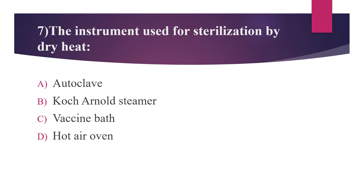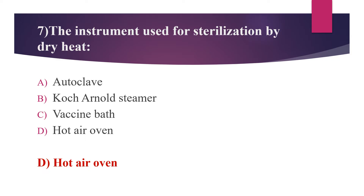Seventh question: the instrument used for sterilization by dry heat. Option A: autoclave. Option B: Koch's Arnold steamer. Option C: water bath. Option D: hot air oven. The answer is option D, hot air oven. The hot air oven is the dry heat sterilization instrument, while the autoclave is a moist heat sterilization instrument. The holding period of the hot air oven is 160°C for one hour, which is used to sterilize glassware, forceps, scalpels, glass syringes, slabs, and pharmaceutical products such as liquid paraffin, dusting powder, and grease.